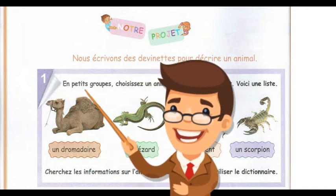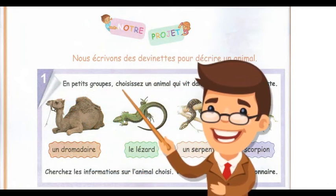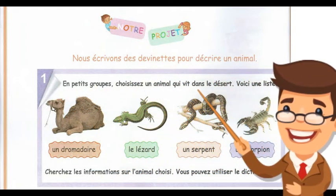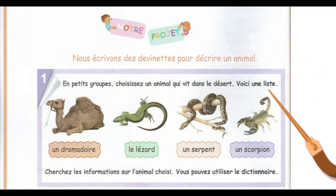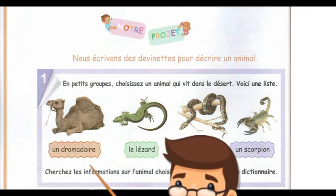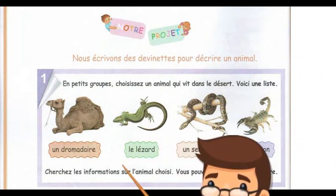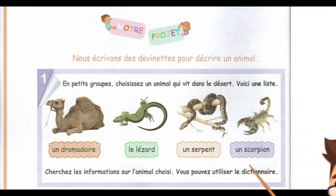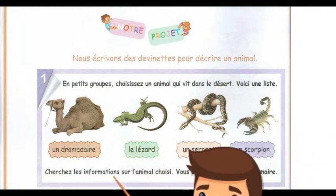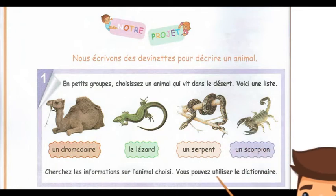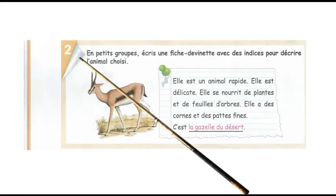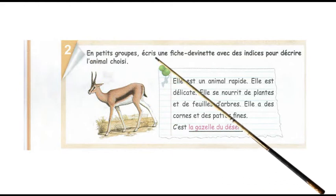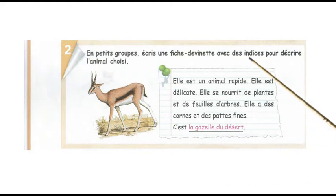En petit groupe, choisissez un animal qui vit dans le désert. Voici une liste : un dromadaire, le lézard, un serpent, un scorpion. Cherchez les informations sur l'animal choisi. Vous pouvez utiliser le dictionnaire. En petit groupe, écrivez une fiche devinette avec des indices pour décrire l'animal choisi.